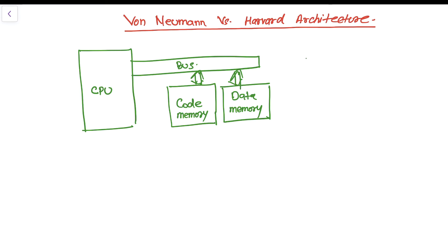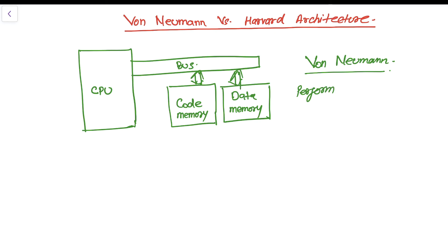The same bus is connected with the code memory as well as the data memory. So this is the Von Neumann architecture. In this Von Neumann architecture, at a single time either the CPU can fetch a code or the CPU can fetch data from the memory. Because of this limitation, the performance gets affected.